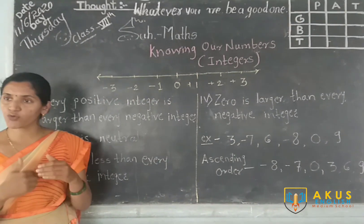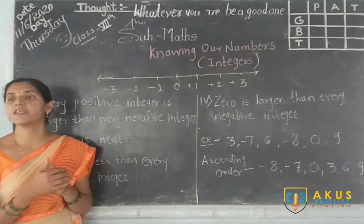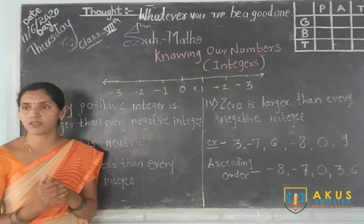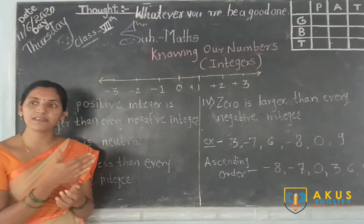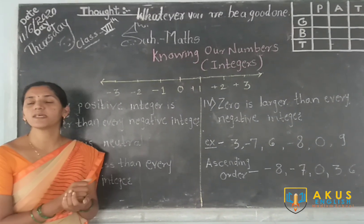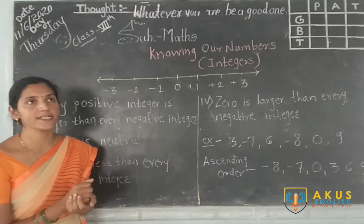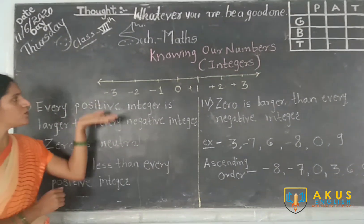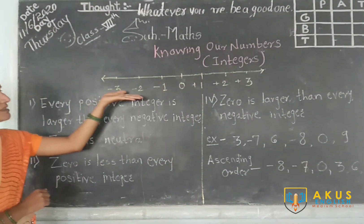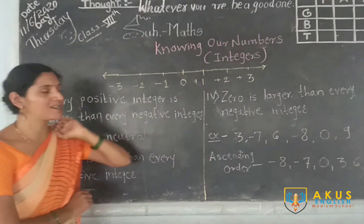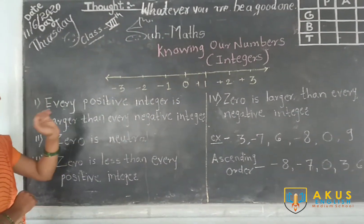Now before we start with the properties of integers, let us revise some basic properties. This is the number line — the line on which we can represent numbers.